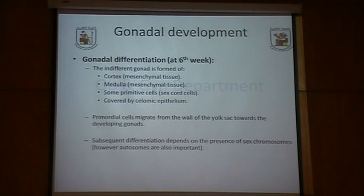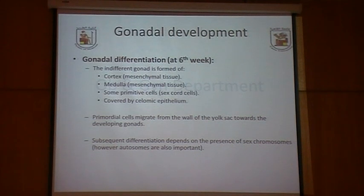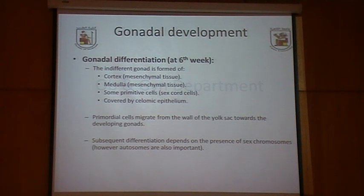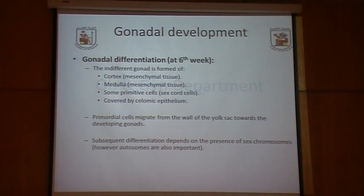Gonadal development starts early at around six weeks. The indifferent gonad is formed of a cortex and a medulla, both formed of mesenchymal tissue, and some primitive cells around it which form the sex cord cells, covered by coelomic epithelium. The primordial cells migrate from the secondary yolk sac towards the developing gonad, and subsequent differentiation depends upon the presence or absence of the sex chromosomes.